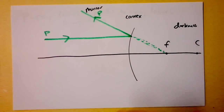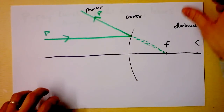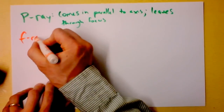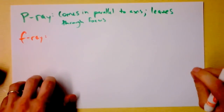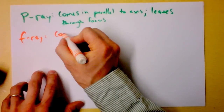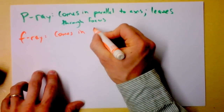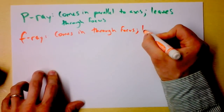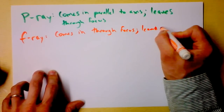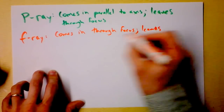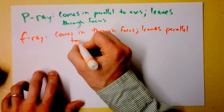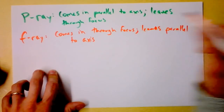Fire up your ray gun again — what are we going to shoot next? I'd like to shoot the F-ray. The F-ray is the exact opposite of the P-ray. It comes in through the focus and leaves parallel — parallel to the axis.